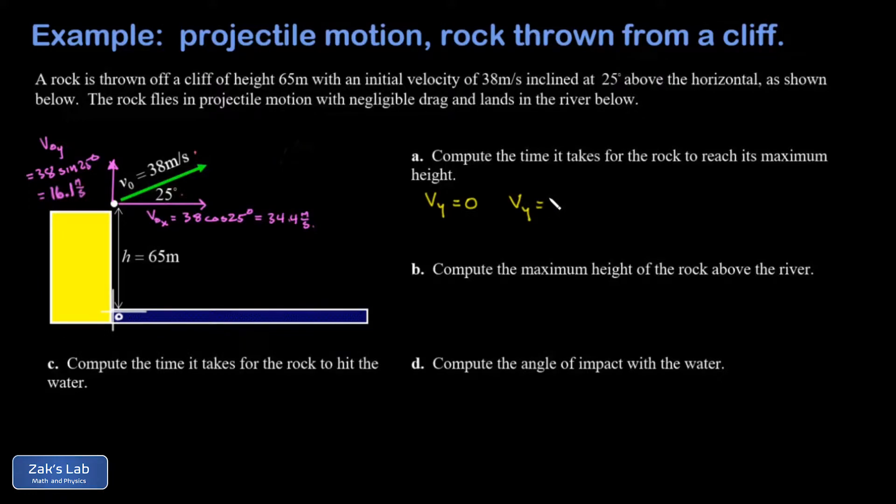So we plug into our second kinematics equation: vᵧ = v₀ᵧ + aᵧt. Well the y acceleration is negative g because we're in free fall, so I get vᵧ = v₀ᵧ - gt.